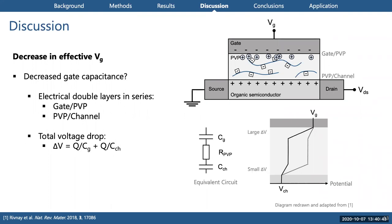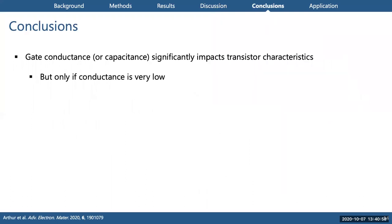This voltage difference needs to drop across both of the capacitors, but the amount that drops depends upon the capacitance of each double layer. If we have a large gate capacitance, this initial drop will be small, leaving most of the voltage to drop across the PVP-channel interface, corresponding to a large effective gate voltage that's very close to the applied gate voltage. Now if the gate capacitance is small, however, we see the opposite effect and thus a smaller effective gate voltage.